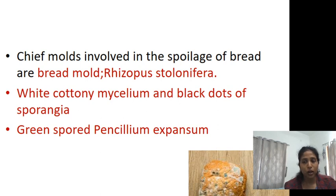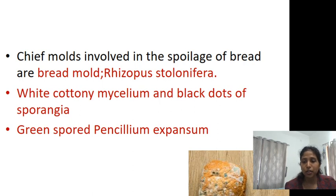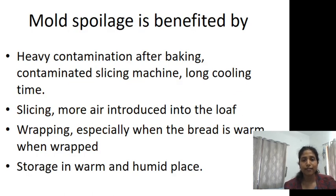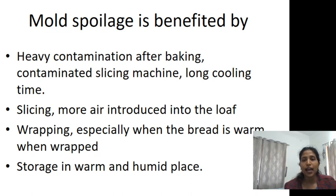The chief mold involved in spoilage of bread is the bread mold Rhizopus stolonifer, which shows white cottony mycelium and black spots of sporangia — you can see a cotton-like appearance in the picture. Penicillium expansum is another common mold found on bread, appearing as green spots.